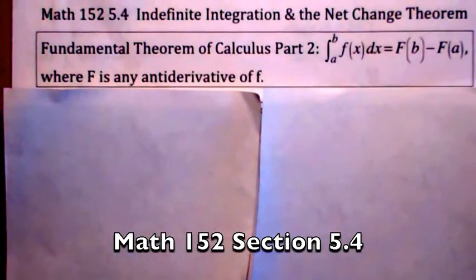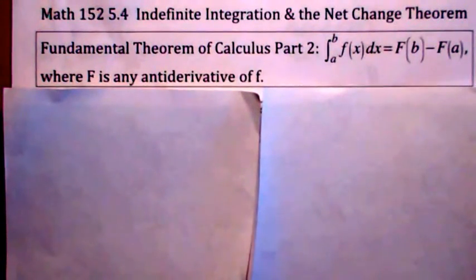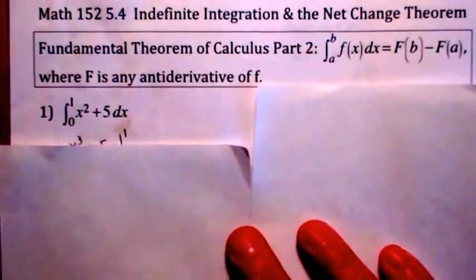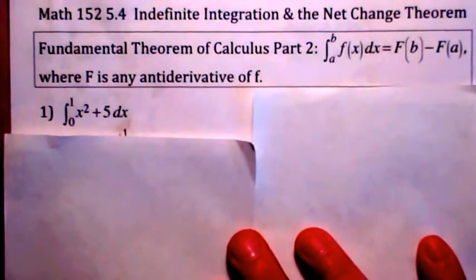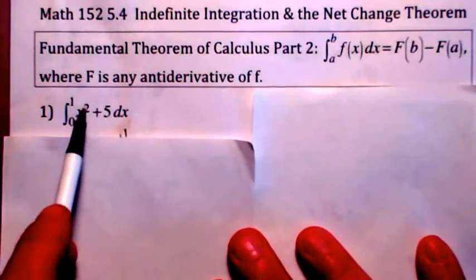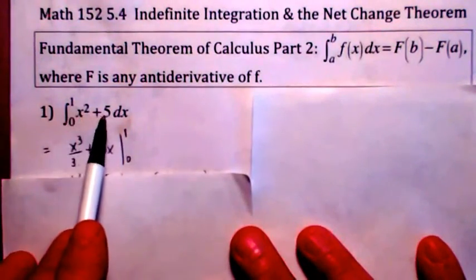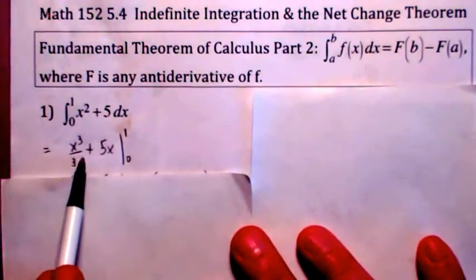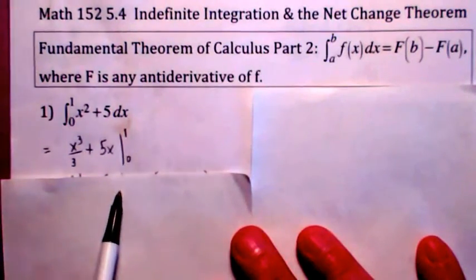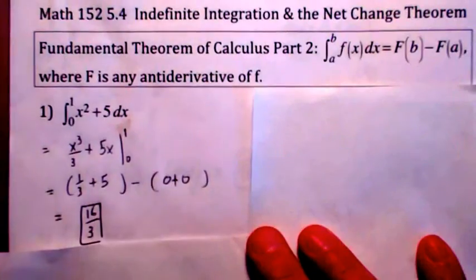We're going to continue talking about aspects of the Fundamental Theorem of Calculus Part 2. We're going to talk about indefinite integration and also what's called the net change theorem. Remember what the Fundamental Theorem of Calculus Part 2 says: if you want to find a definite integral, as long as this function is continuous, you know it exists. All you have to do is find any antiderivative of the integrand and evaluate it at the limits of integration — top limit minus the bottom limit. In this case you get 16 thirds.